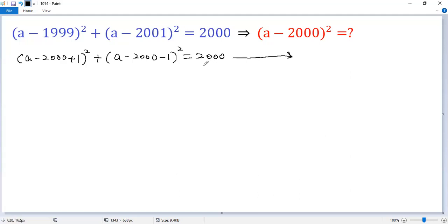At this point, let's do a substitution. Let this part as t. So t equals a minus 2000. So the given condition becomes t plus 1 squared plus t minus 1 squared equals 2000.